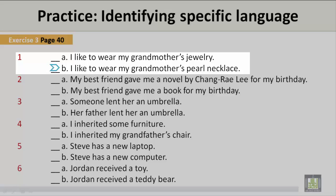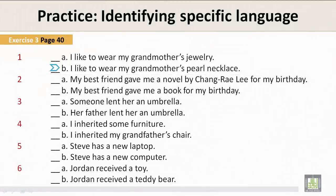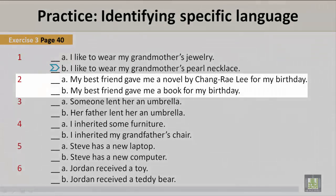B is more specific: I like to wear my grandmother's pearl necklace. Number 2. A: My best friend gave me a novel by Chang-Rae Lee for my birthday. B: My best friend gave me a book for my birthday. Option A is more specific: My best friend gave me a novel by Chang-Rae Lee for my birthday.